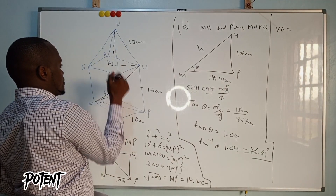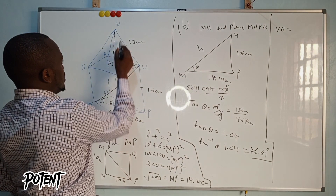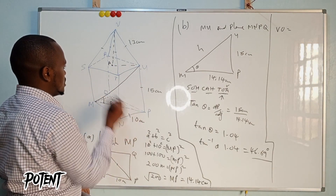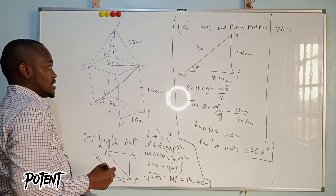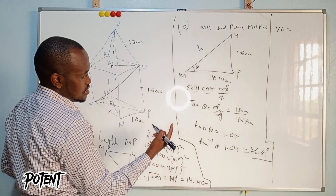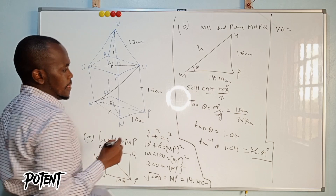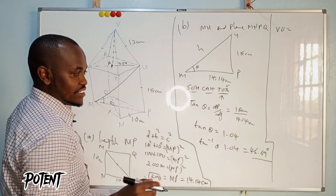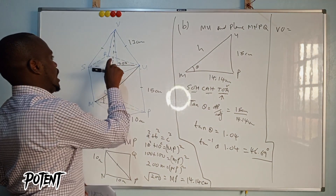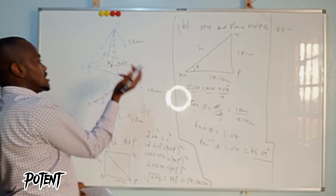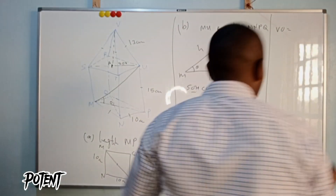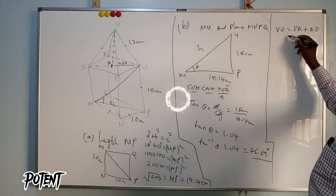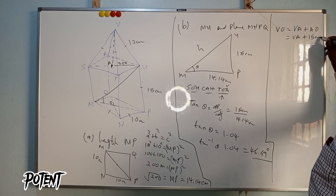We know the slant edge is 13 centimeters and the half-diagonal of the top square base to the center is 7.07 centimeters. Using Pythagoras: VA squared plus 7.07 squared equals 13 squared, so VA squared equals 13 squared minus 7.07 squared. VO then equals VA plus 15 centimeters.